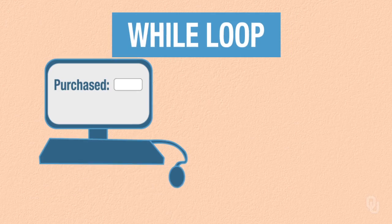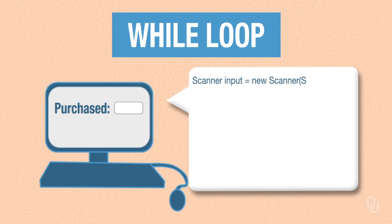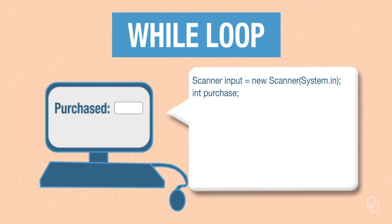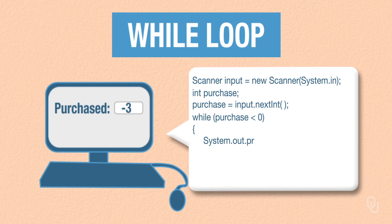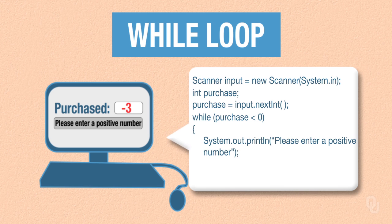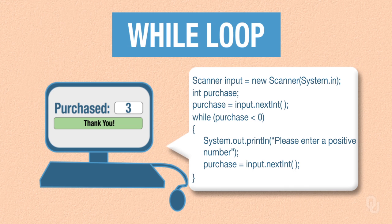Here's the while loop that solves our problem. Scanner input = new Scanner(System.in). Then we create a variable to store our purchase: int purchase. We get the number from the user: purchase = input.nextInt(). And now we need a loop: while purchase is less than zero, System.out.println 'Please enter a positive number', then purchase = input.nextInt(). This loop will run as many times as the user makes mistakes, so we know when the loop is finished they've made a positive order.